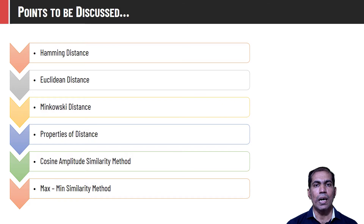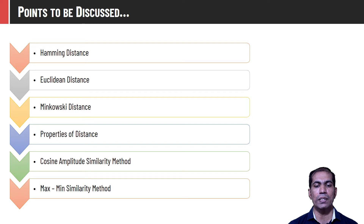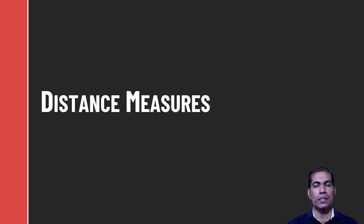In this video I will be talking about some dissimilarity measures like Hamming distance, Euclidean distance, and the more generalized version that is Minkowski distance. I will also talk about various properties of distance measures, and in the later part of this video I will be talking about similarity measures like cosine amplitude and max-mean similarity measure. Let us start with some distance measures.